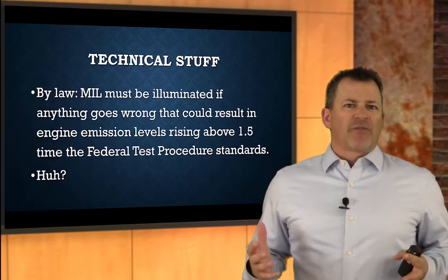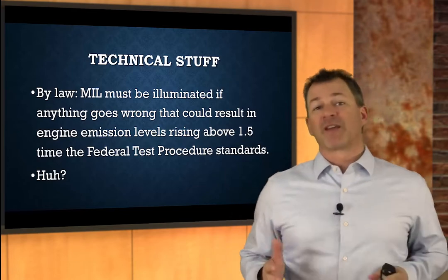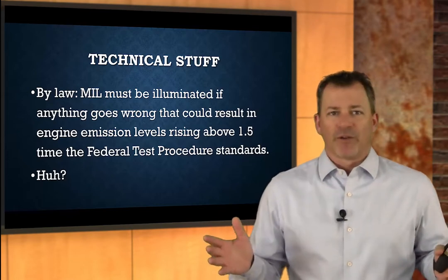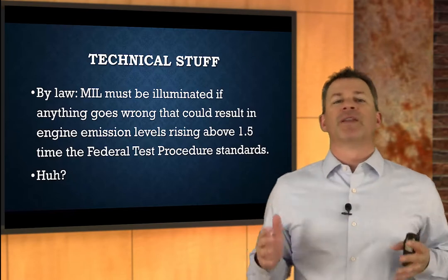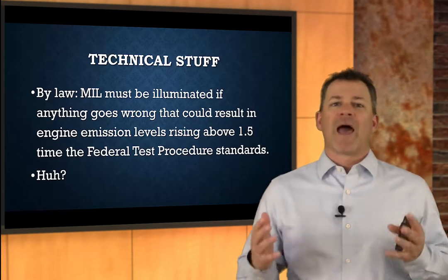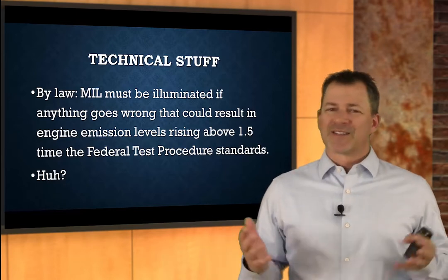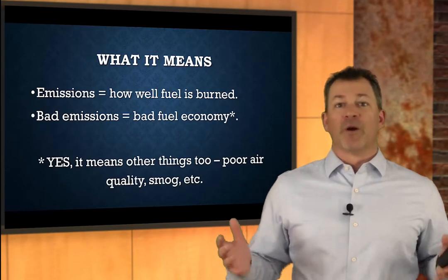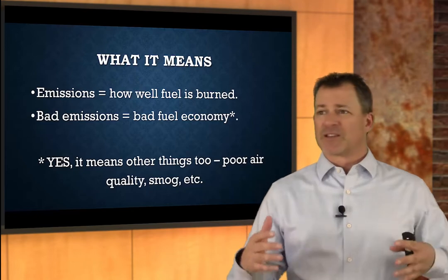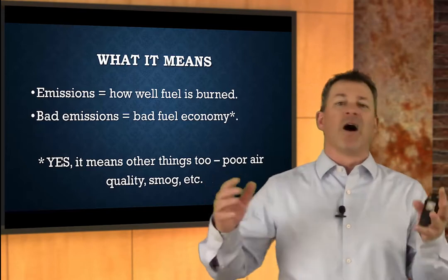Some real technical stuff, just in case you want to know it: by law, that malfunction indicator lamp must be illuminated if anything goes wrong with any engine component or engine control component that could result in tailpipe emission levels rising above one and a half times the federal test procedure standard. Essentially, emissions relate to how well fuel is burned. If we don't burn it very well, we get a lot of nastiness out the tailpipe — and that nastiness relates to air pollution, poor air quality, smog, acid rain, and all kinds of other problems.